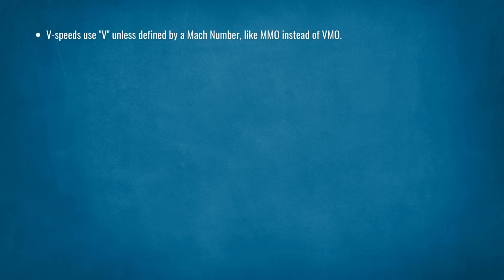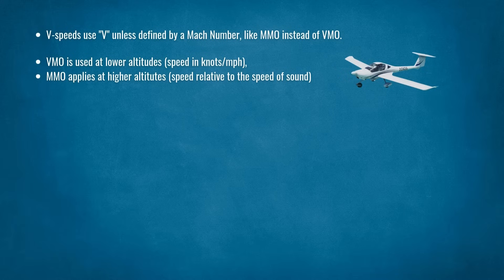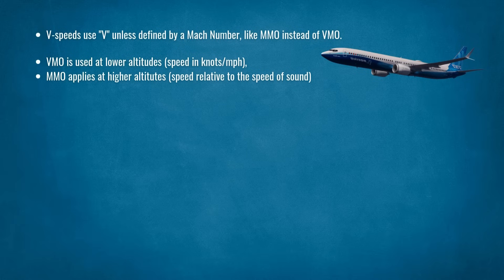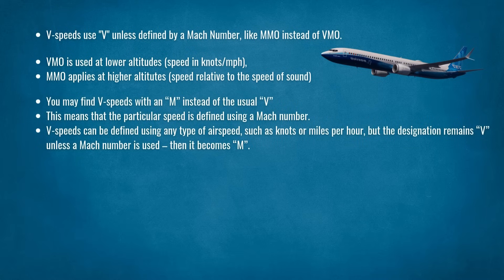V-speeds use 'V' unless defined by a Mach number, like MMO instead of VMO. VMO is used at lower altitudes, speed in knots or miles per hour. MMO applies at higher altitudes, speed relative to the speed of sound. You may find V-speeds with an 'M' instead of the usual 'V,' meaning that particular speed is defined using a Mach number. The designation remains 'V' unless a Mach number is used, then it becomes 'M.'